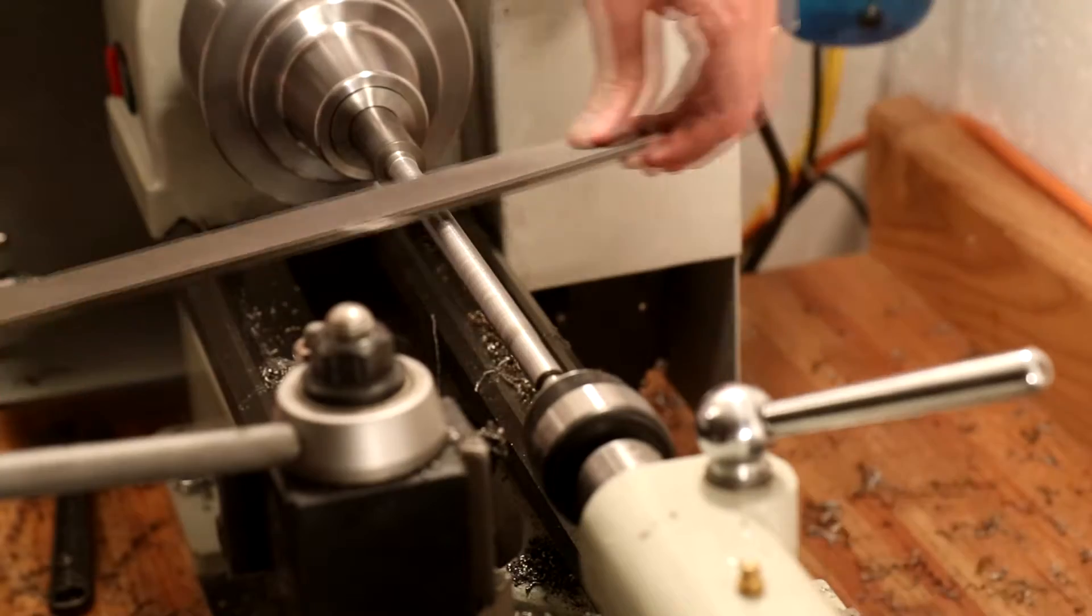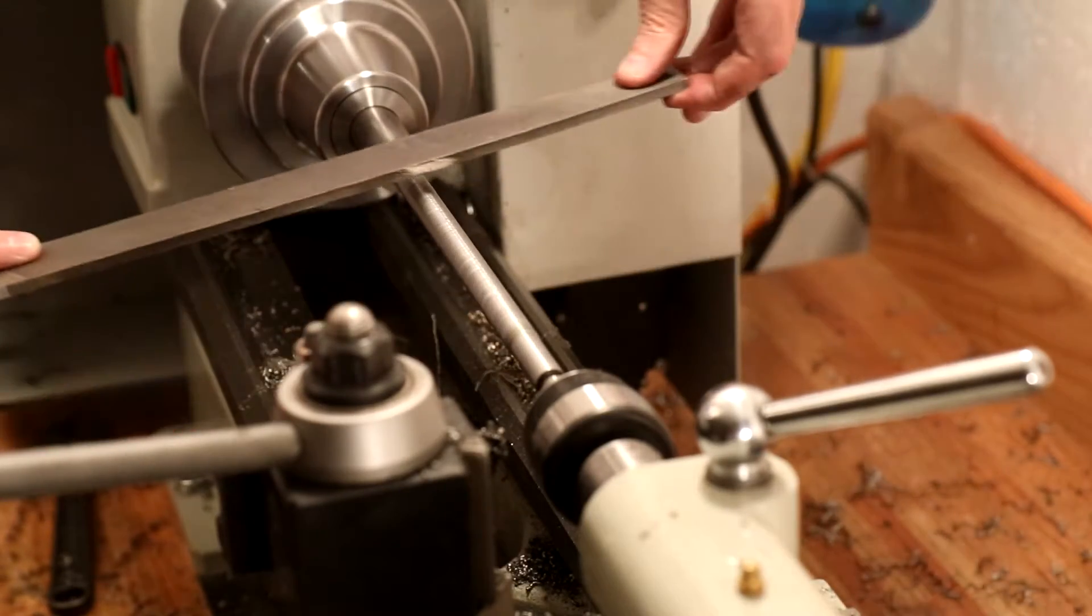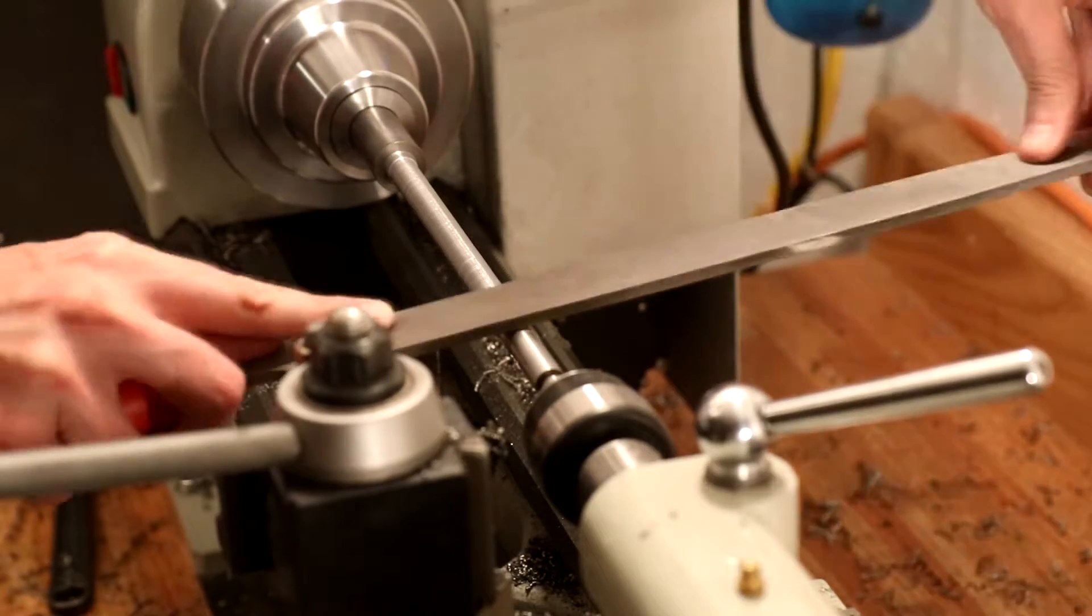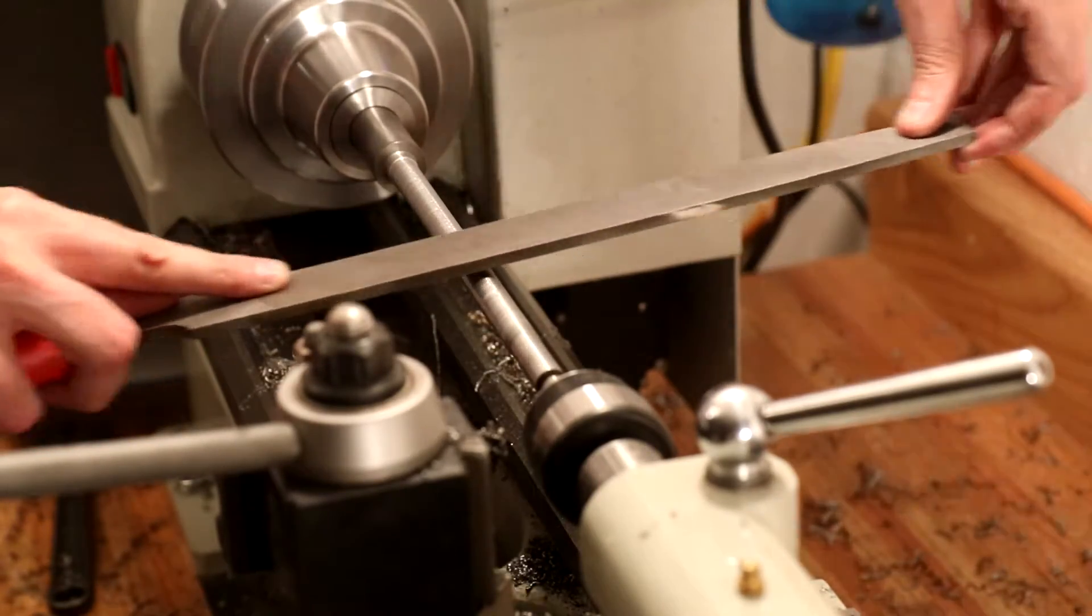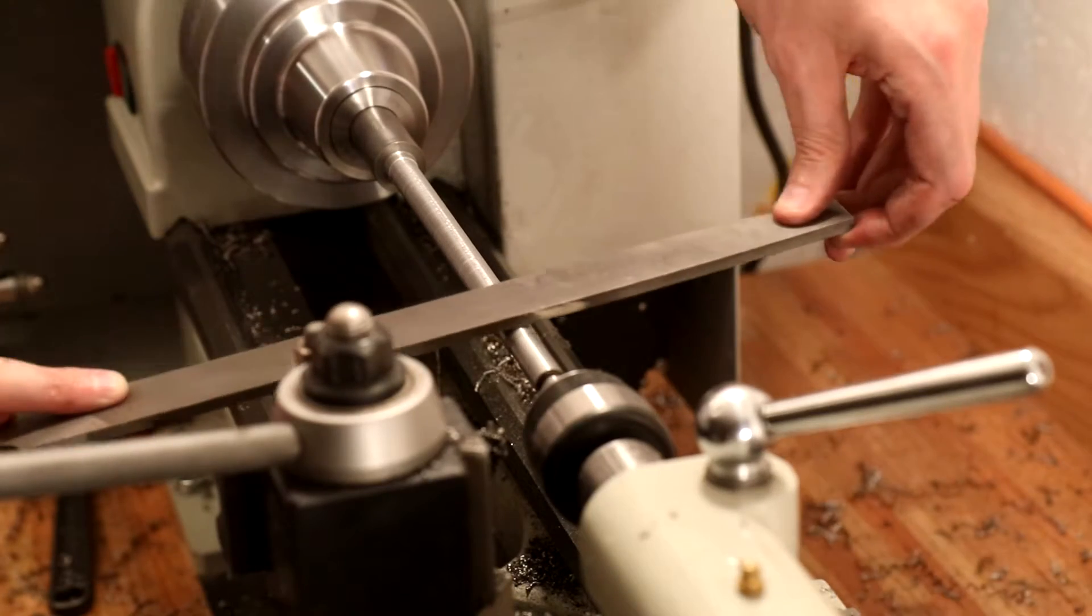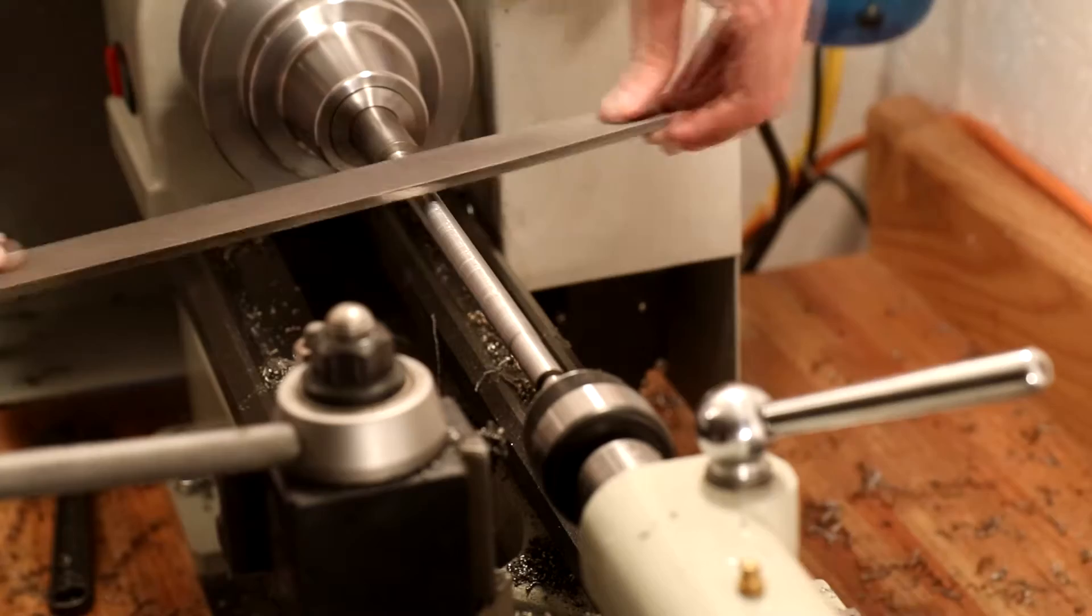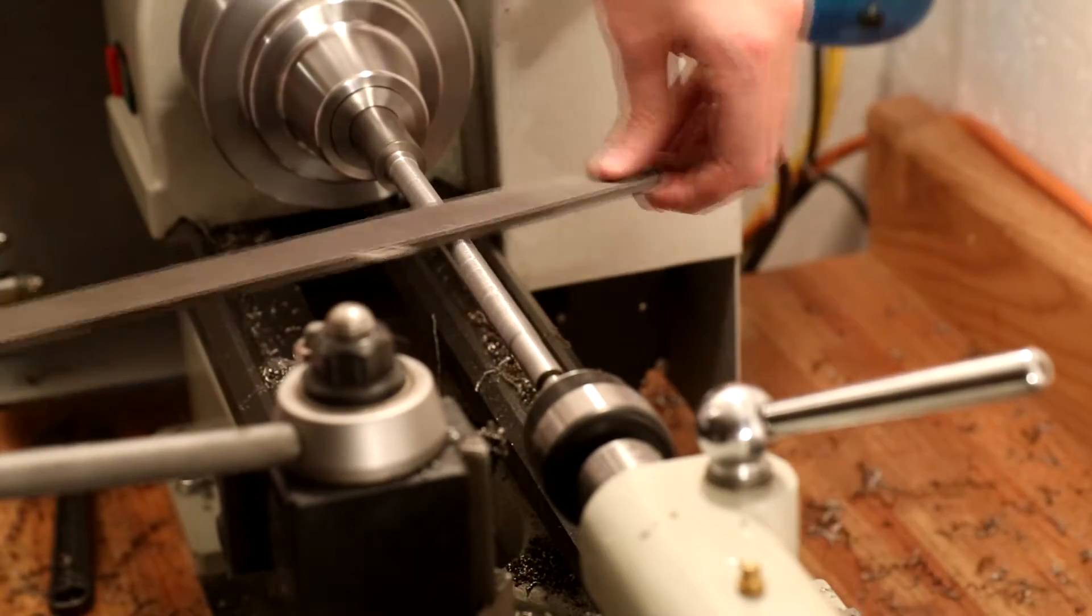To avoid the rust, you just have to dry everything off well, blow it off with air, and apply some oil to the surfaces. Definitely some more experimentation is in order. For the purpose of this part, the surface finish was certainly acceptable. I'm just trying to clean it up a little bit with a file.